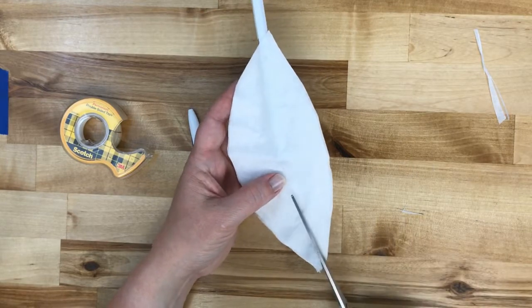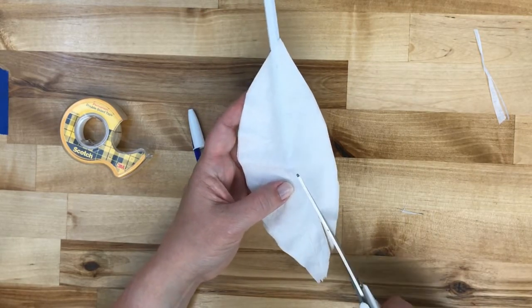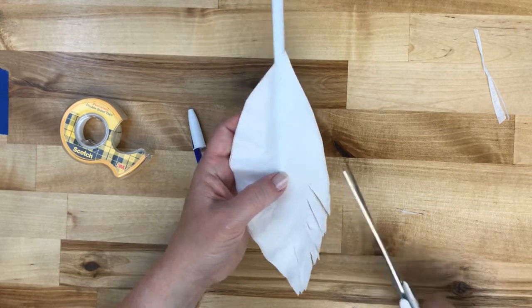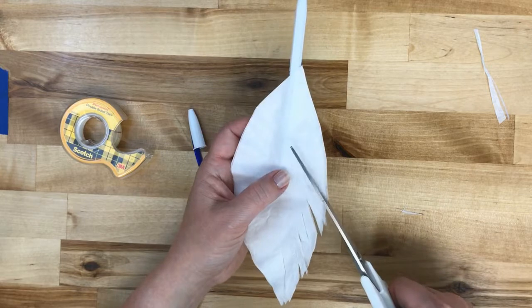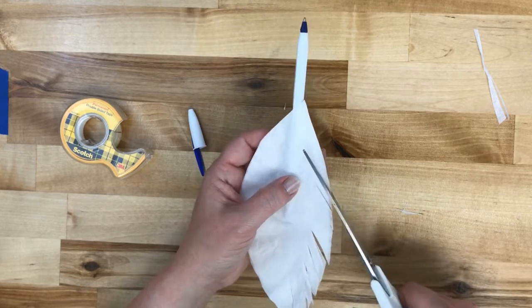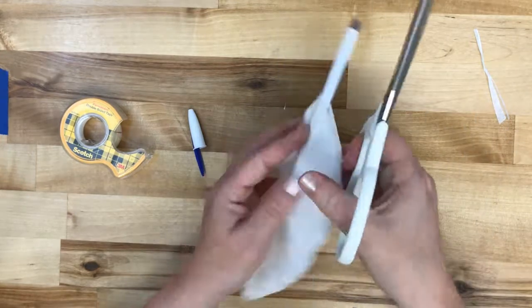You want to go ahead and make some cuts. These are forming the veins of the feather. You want to cut towards the pen at an angle. Again, these can be big or little, depends on who's doing the cutting.